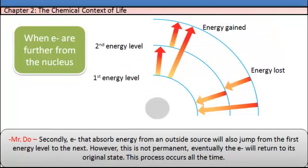Secondly, electrons that absorb energy from an outside source will also jump from the first energy level to the next. However, this is not permanent. Eventually, the electrons will return to their original state. This process occurs all the time.